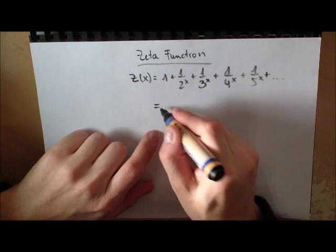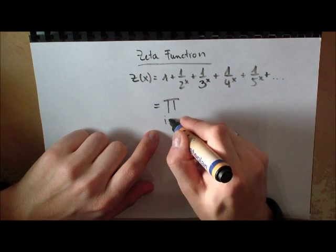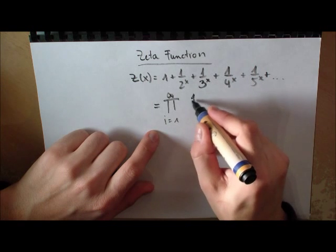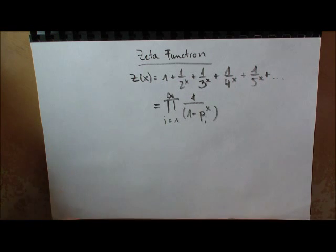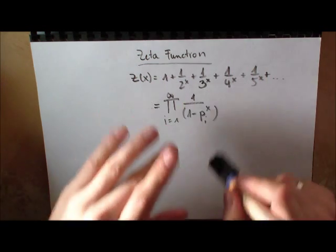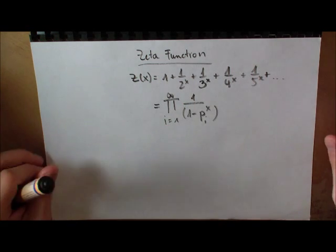I'm just writing this down: the product from i equals 1 to infinity, which looks like 1 minus P_i to the negative x. This is going to infinity, so this was the Euler product representation of the zeta function.